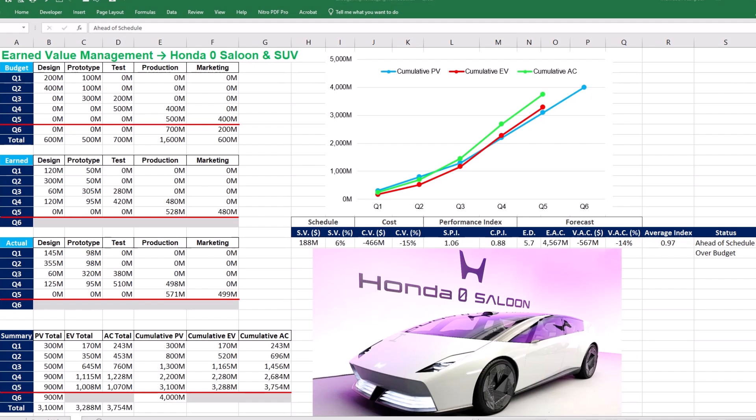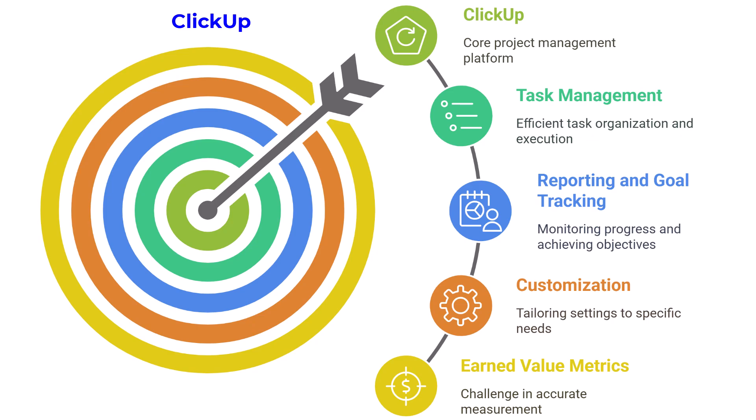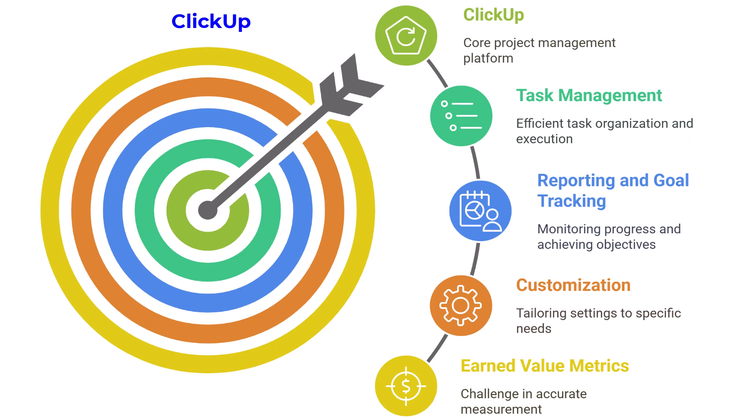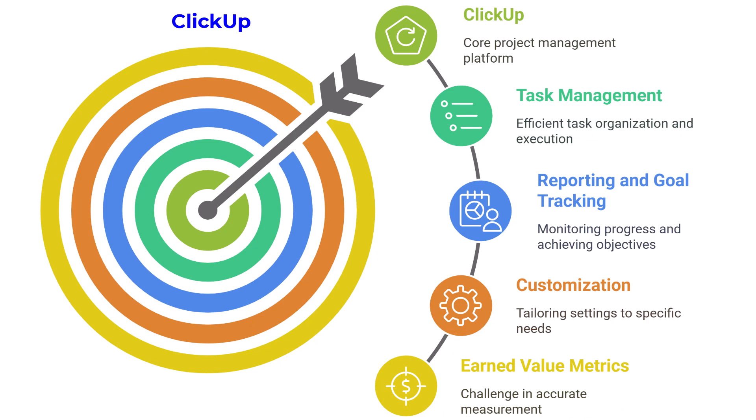Finally, ClickUp presents a modern all-in-one project management solution that is becoming popular among project managers. ClickUp's interface combines task management with detailed reporting and goal tracking. It offers custom statuses, goals, and measurement parameters that can be configured to reflect both planned and actual progress accurately. ClickUp's flexibility means you can design dashboards that automatically update as tasks are completed. The challenge is configuring ClickUp to accurately measure and report earned value metrics, which requires an upfront investment in time and training. However, once the system is tailored to your project's needs, it delivers a seamless flow of information that can be easily shared across the organization.